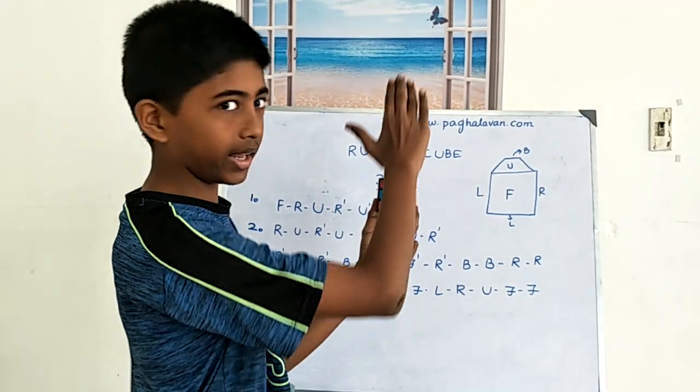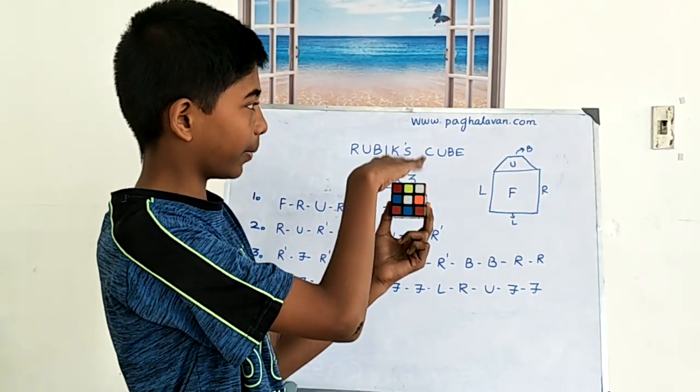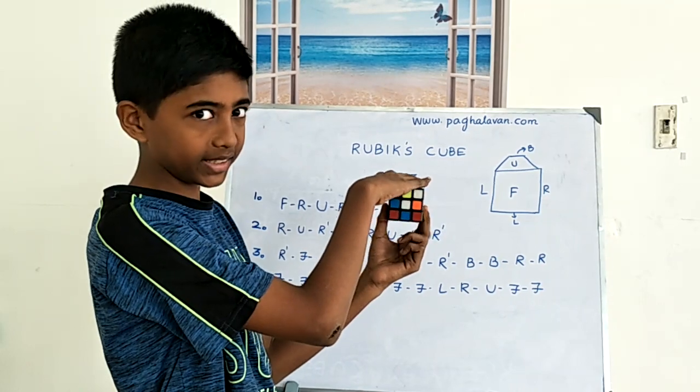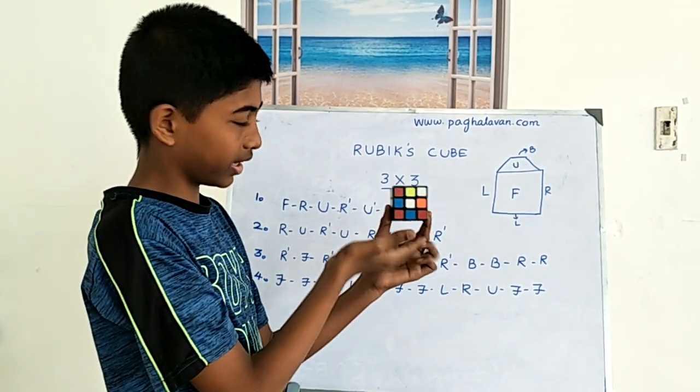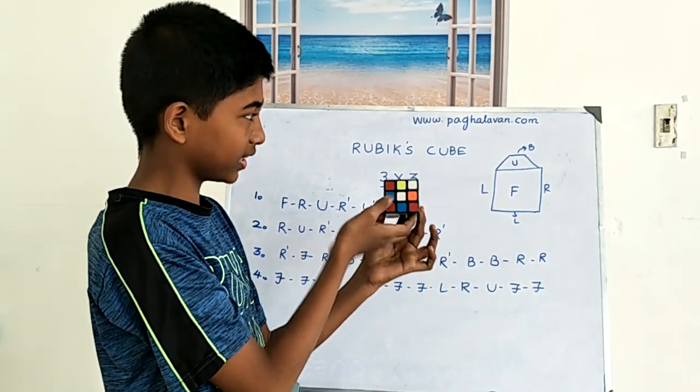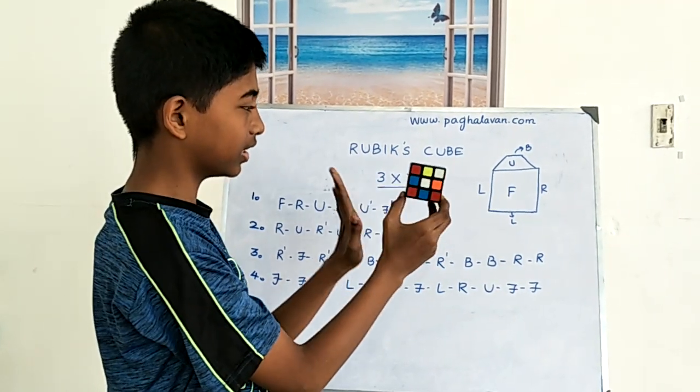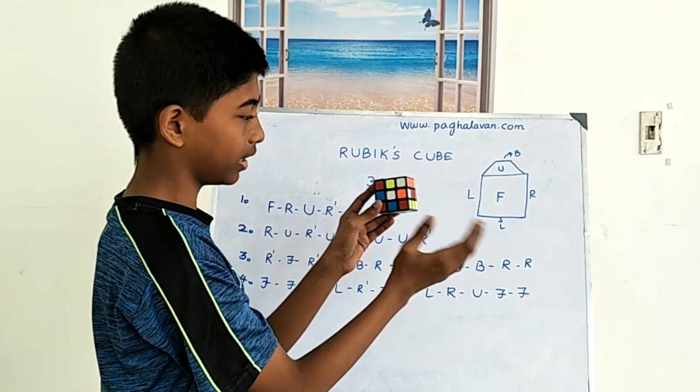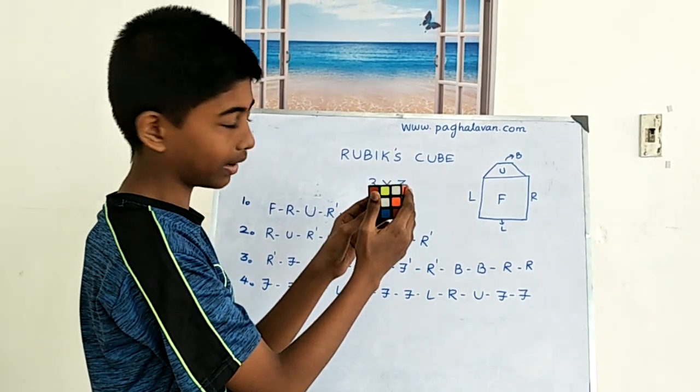The wrong part is the upper case. This is the lower case. This is the left side and the right side.